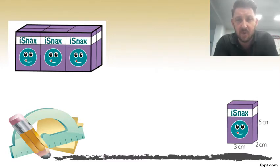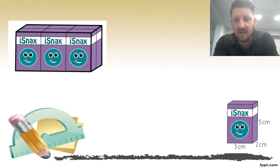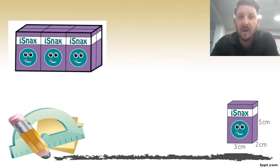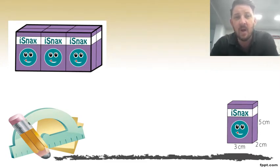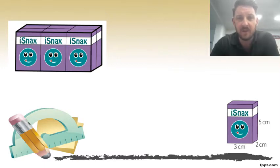In this example you have your iSnacks. You can see down the bottom right-hand corner that it's telling you what the dimensions of one of the iSnacks are. The first thing we have to do when working out the surface area is find out what the outside of the shape is — what the dimensions are.